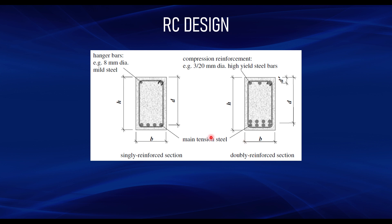For a doubly reinforced section, you have to provide two sets of reinforcement: one for the tension reinforcement and the other for the compression reinforcement. You have to design for both tension and compression reinforcement, and this type of section is usually found in beam design.